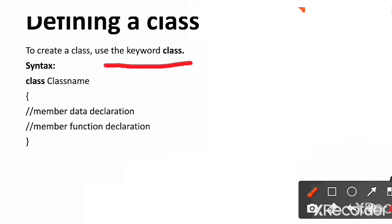First, we write the keyword class followed by the name of the class. Here, the class name is any user defined name. And this user defined name should be a valid identifier.